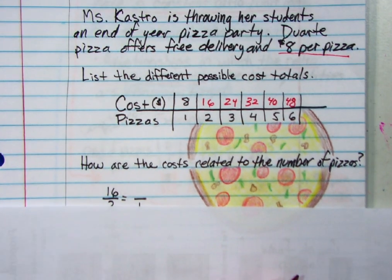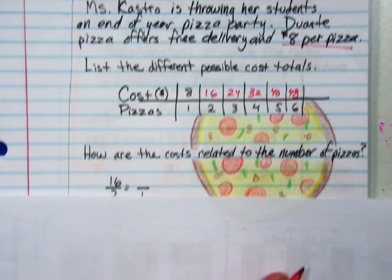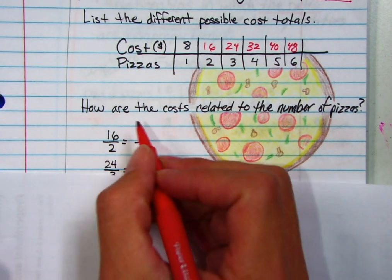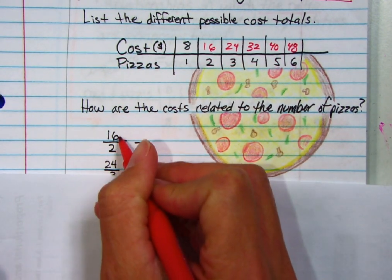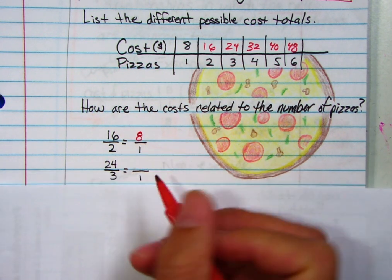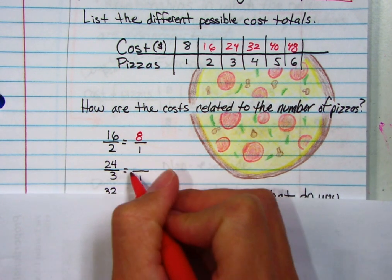So how are the costs related to the number of pizzas? That's my next question. Well, let's take a look. So for sixteen dollars with two pizzas, that reduces to eight over one. Twenty-four dollars with three of them, if I divide it by three to get the unit cost, I get eight over one.